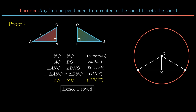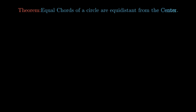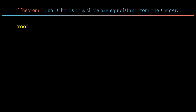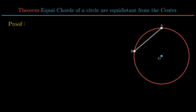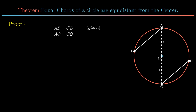Moving on to the next theorem: the two equal chords of a circle are equidistant from the center. Consider a circle with center O. Let AB and CD be the two equal chords. Join AO and OC, both being radii. Construct perpendicular OX on chord AB and OY on chord CD, bisecting the chords.